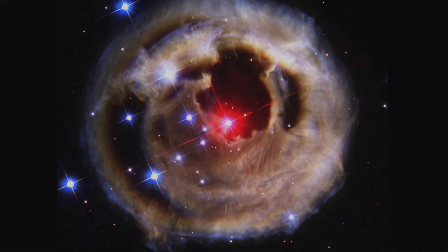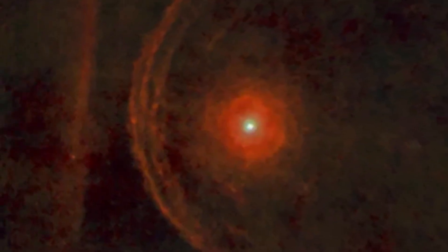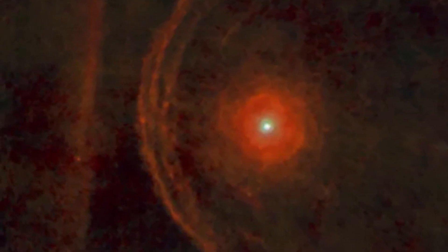Dust clouds, they theorized, or perhaps massive ejections of material from the star's surface. But the dimming passed, and Betelgeuse brightened again, leaving us with more questions than answers.